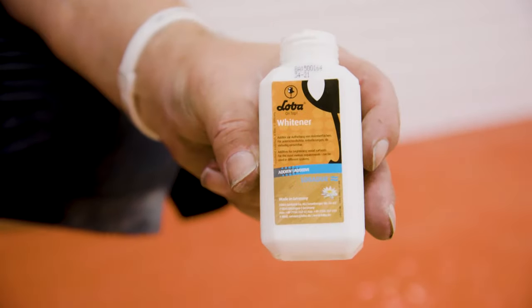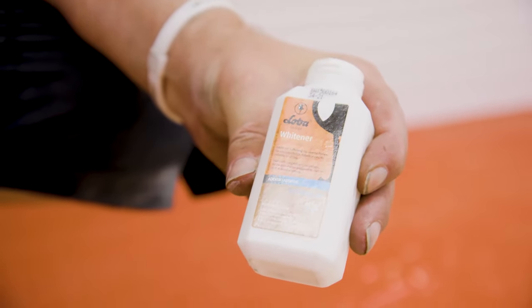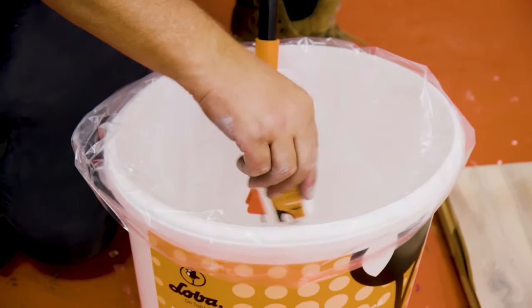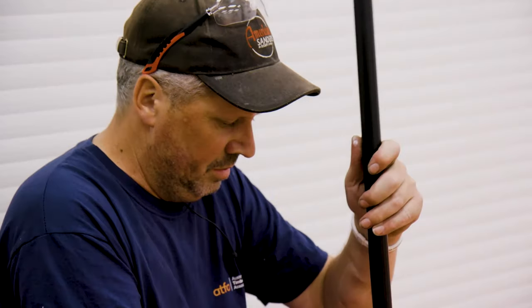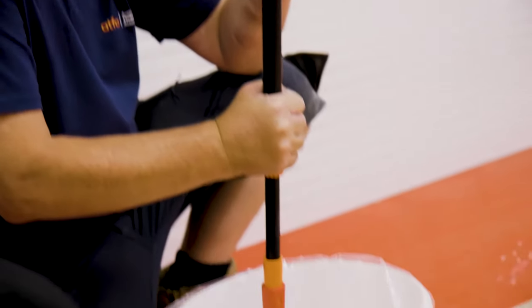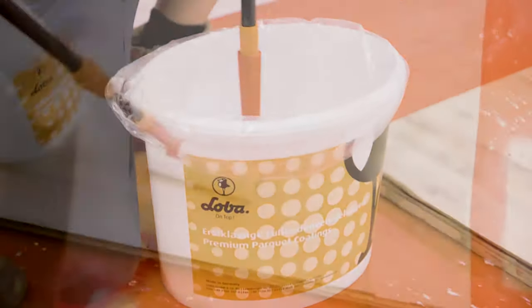Once the sealer has dried, we can add a whitener additive to our top coats. This additive is mixed with a water-based coating to ensure an even dispersion of the colour. The coat is then applied over the sealer following the manufacturer's instructions.